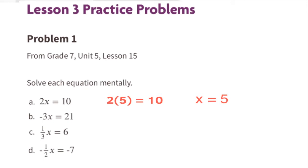B: negative 3 times x equals 21. A negative times a negative equals a positive, and 21 divided by 3 equals 7, so in this case x equals negative 7.